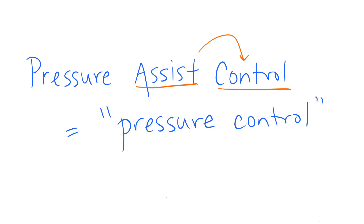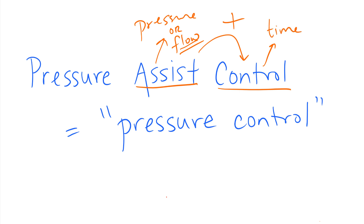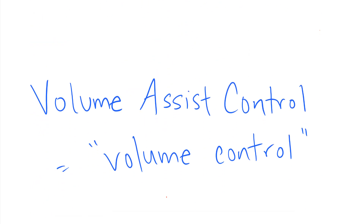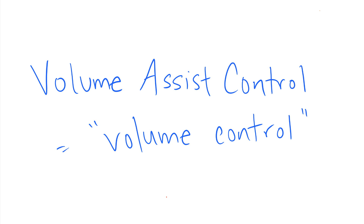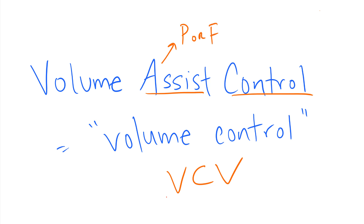In pressure assist control ventilation, the trigger variable is pressure or flow — usually flow, since that's most common — plus time as a backup trigger variable. The other mode is volume assist control ventilation, or volume control, VCV. In volume assist control ventilation, you have assisted breaths and controlled breaths. The trigger variables are pressure or flow for assisted breaths, and time for controlled breaths.